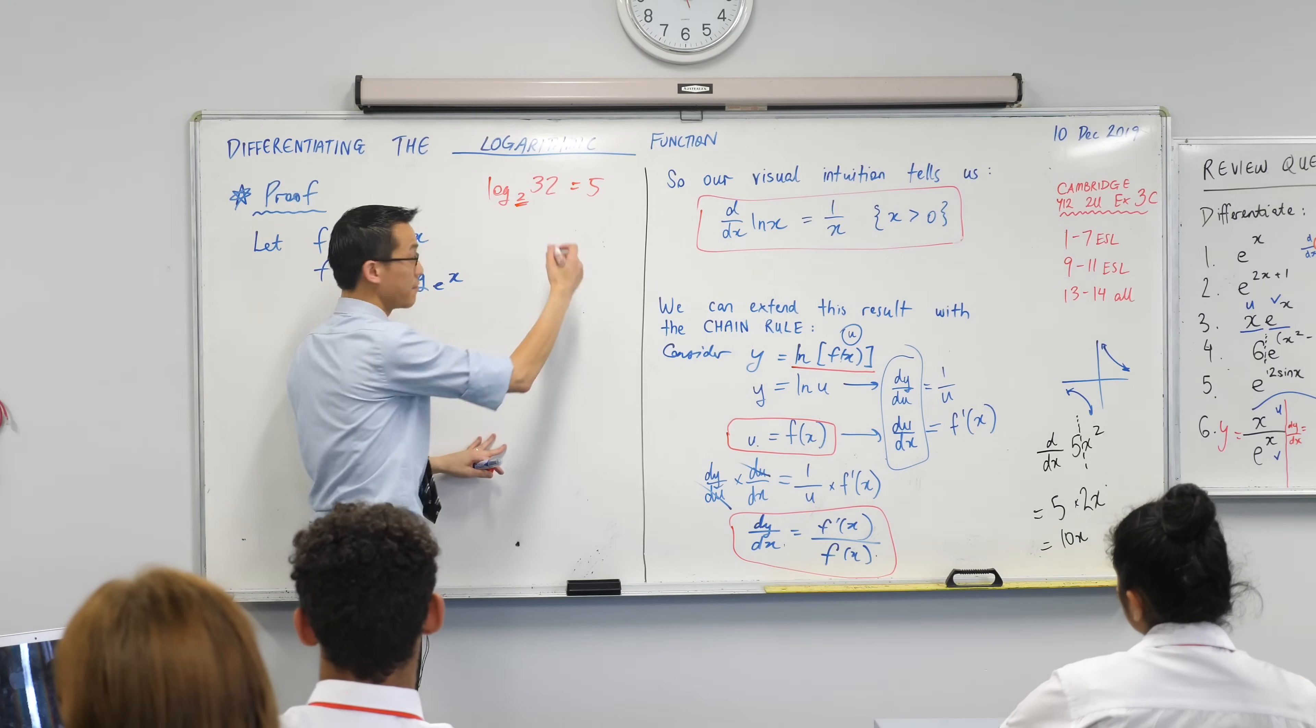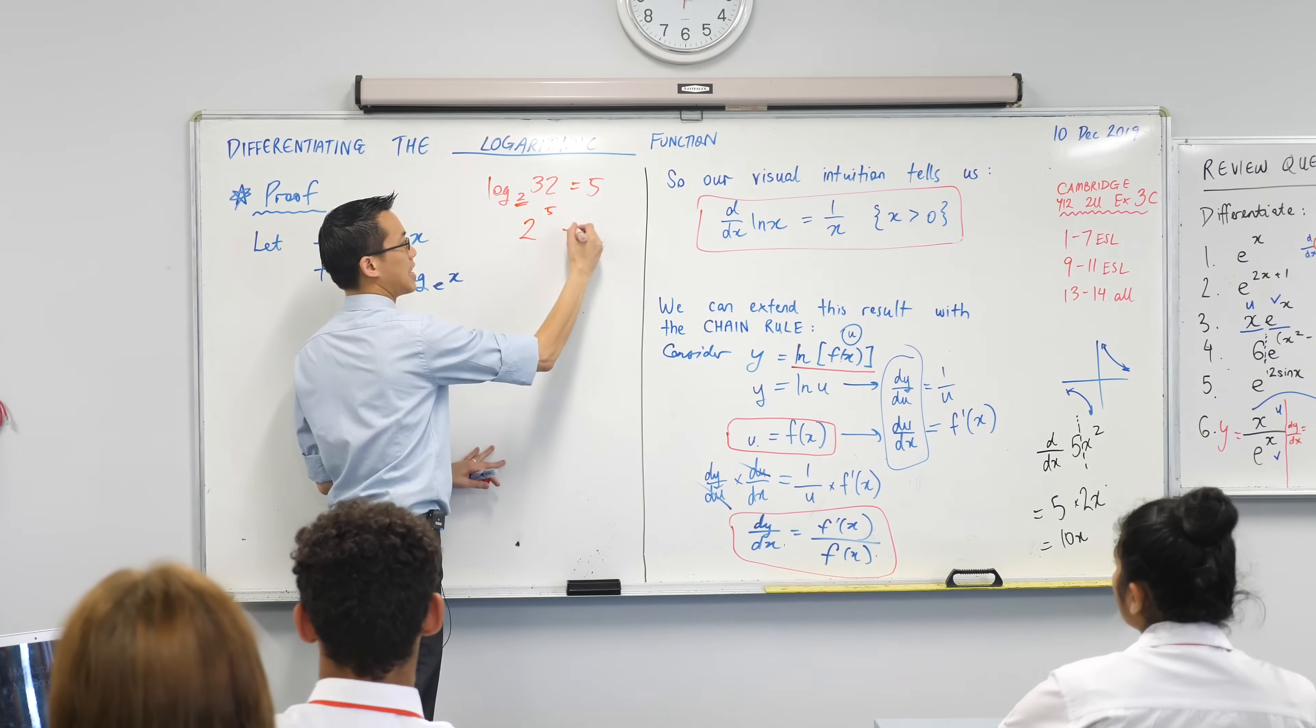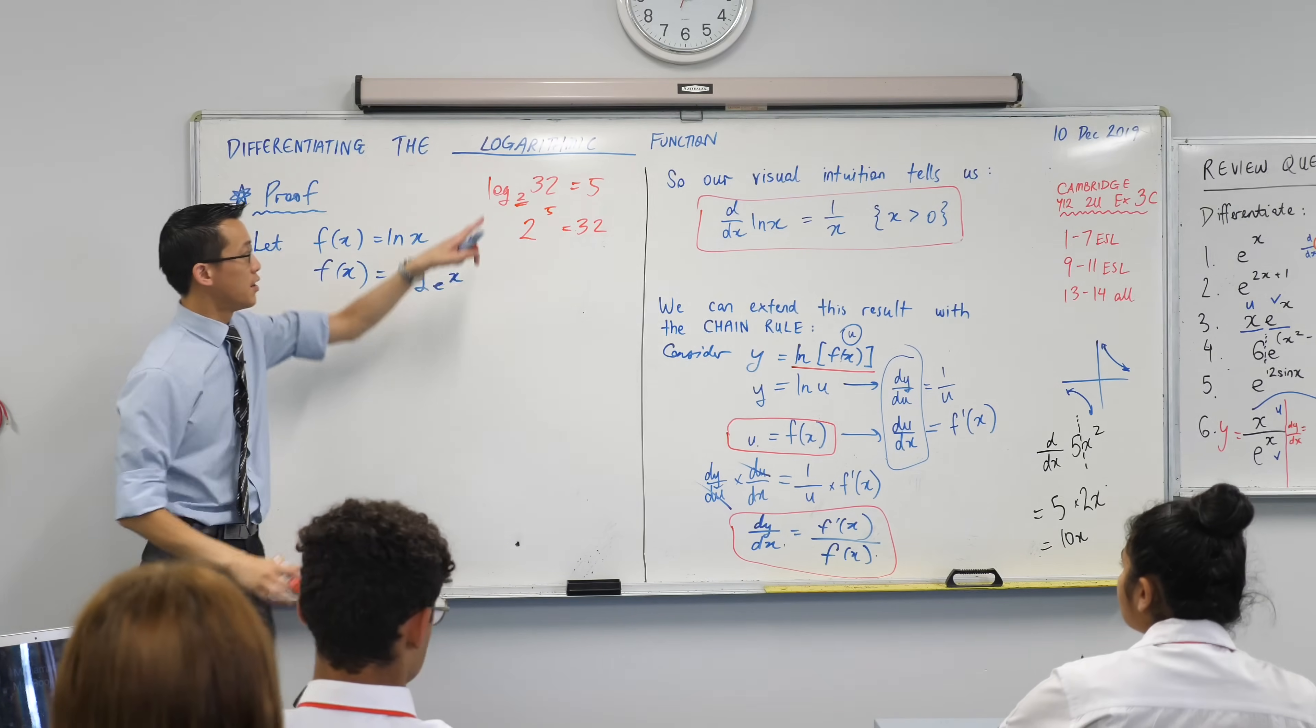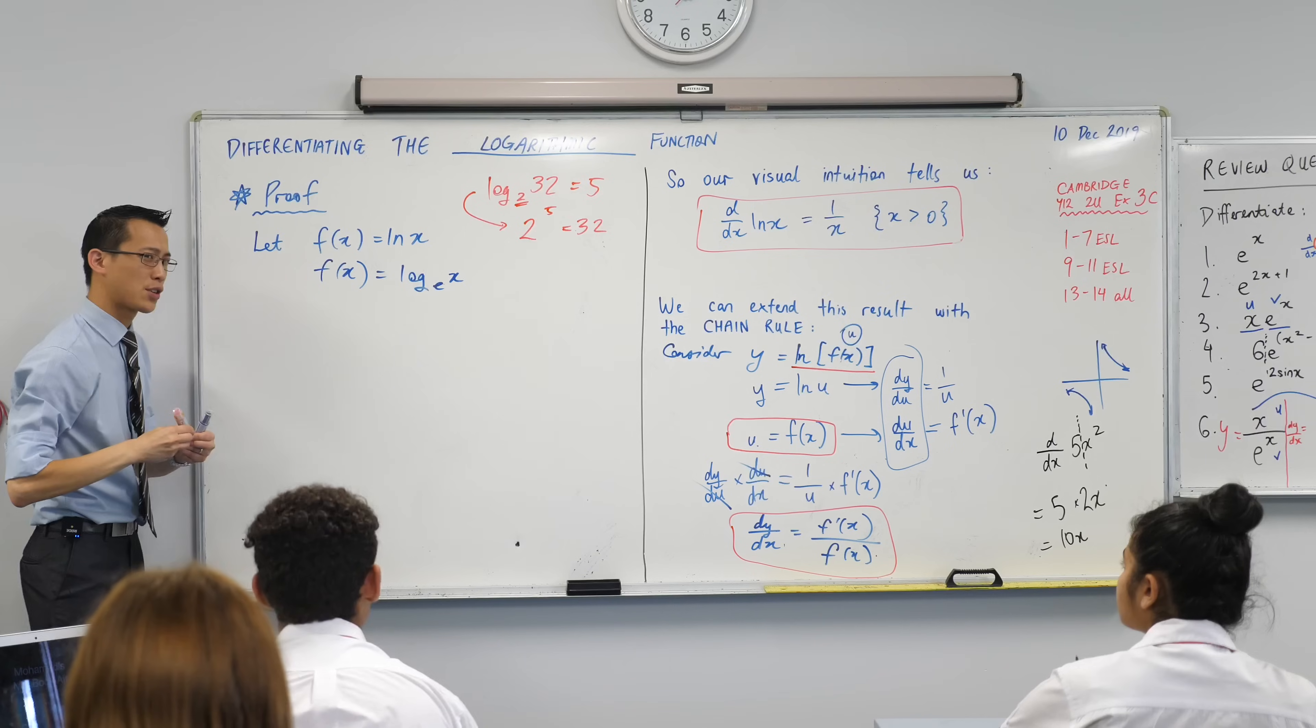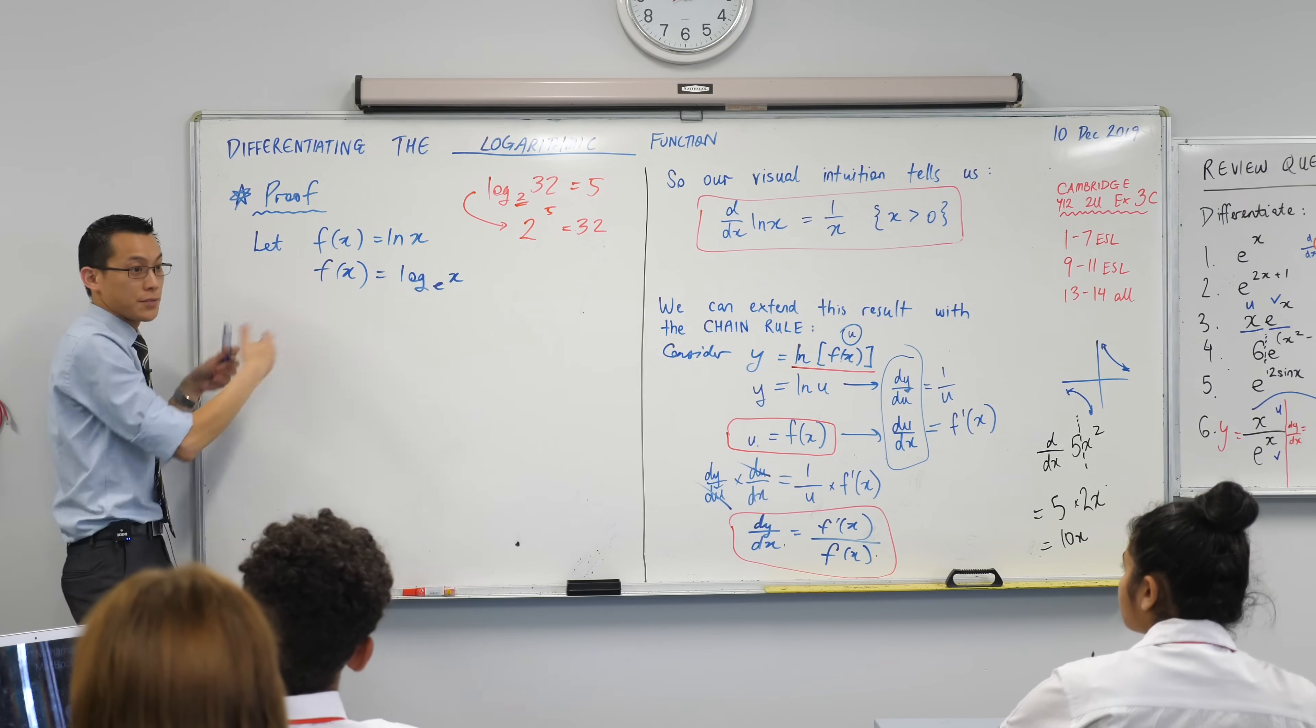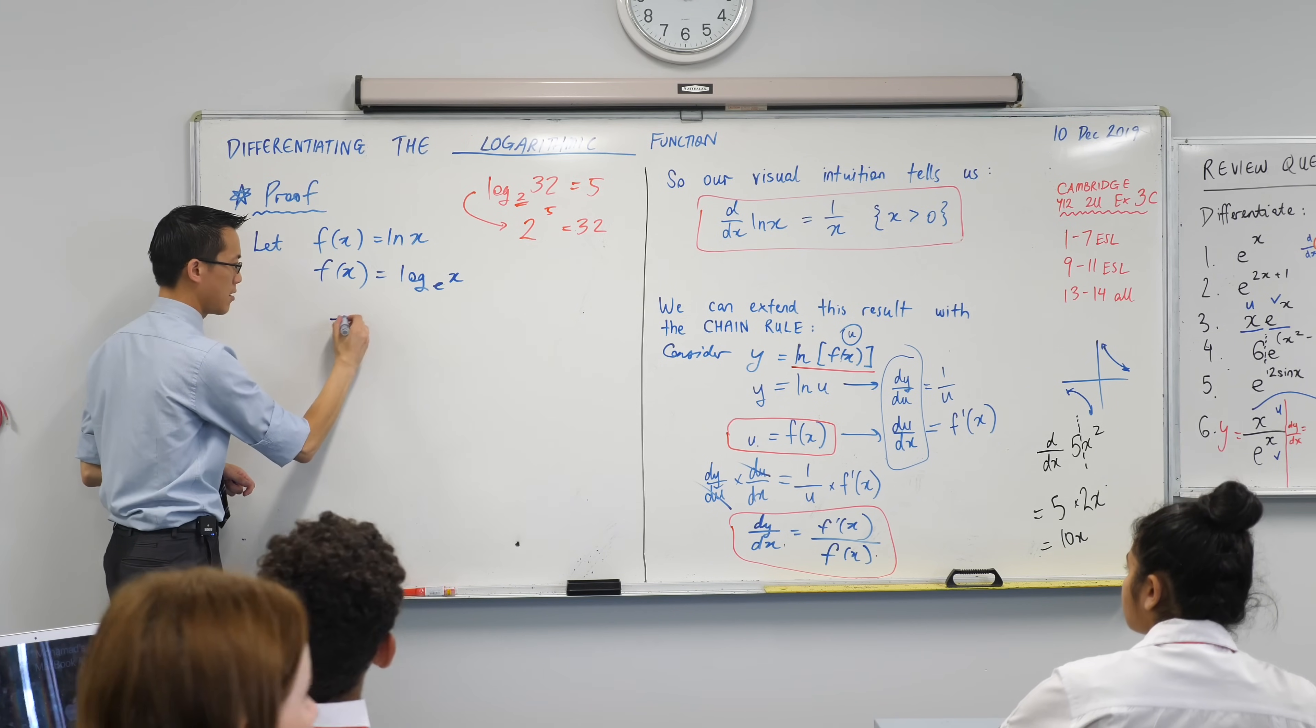I'll give you a clue, start with the base: 2 to the power of 5 gives you 32. Fantastic. So this is what we're going to do but on this line. We started with the base here which was 2. What's the base in this equation? It's E. So I'm gonna write it over here. E.